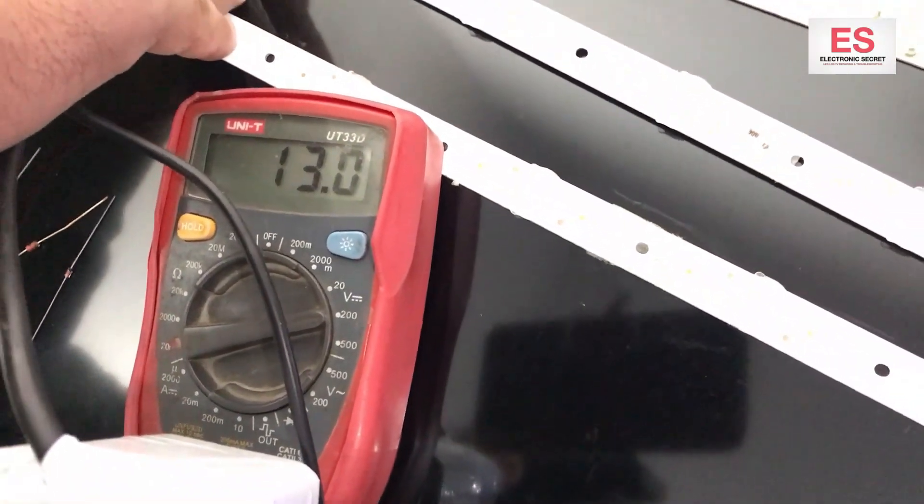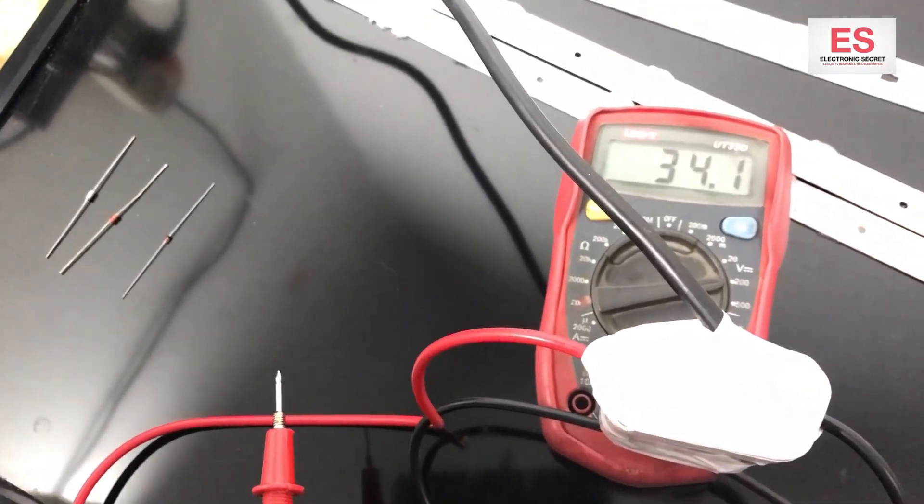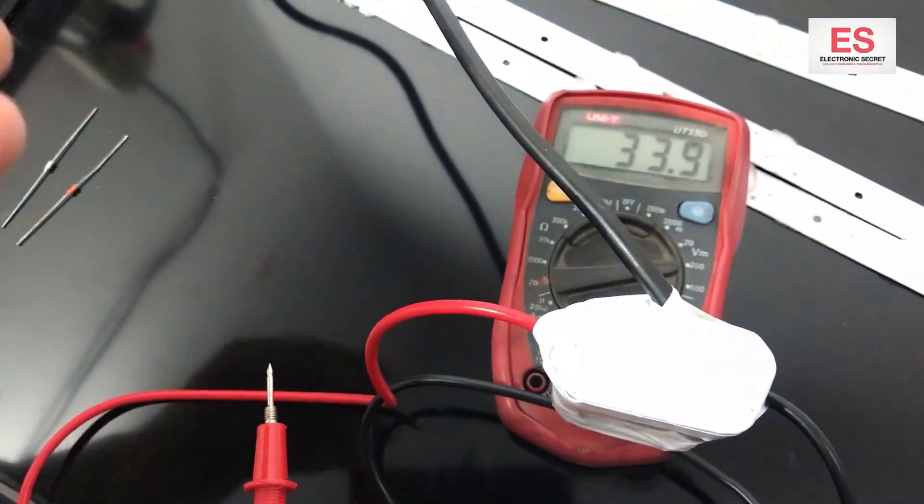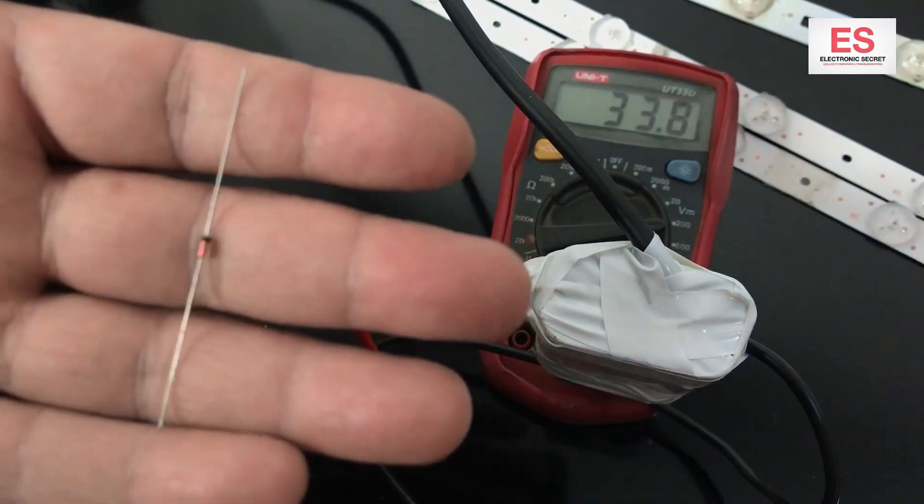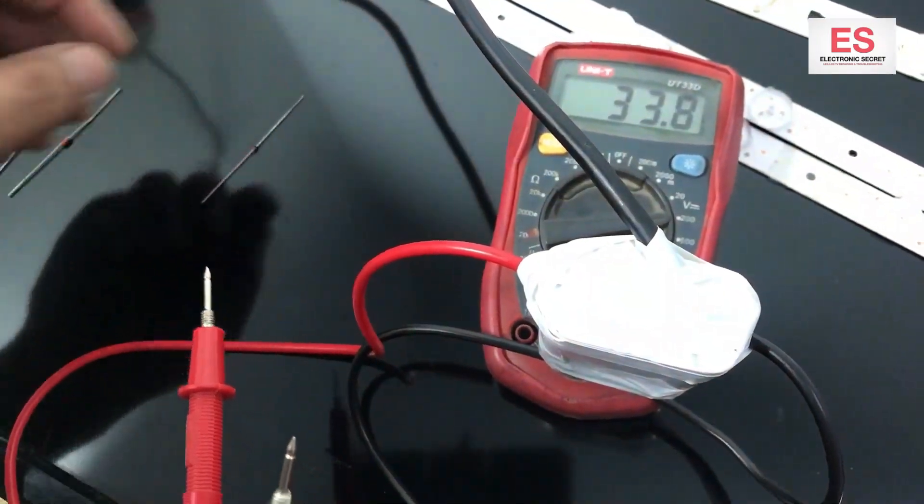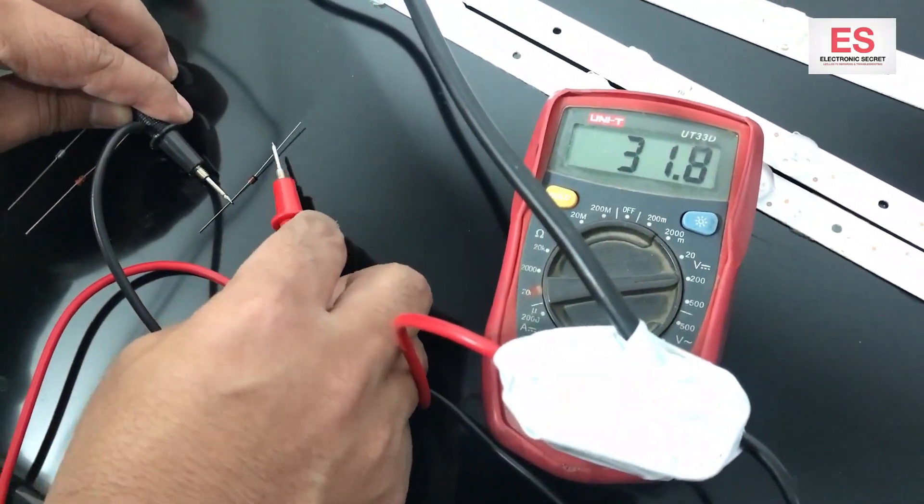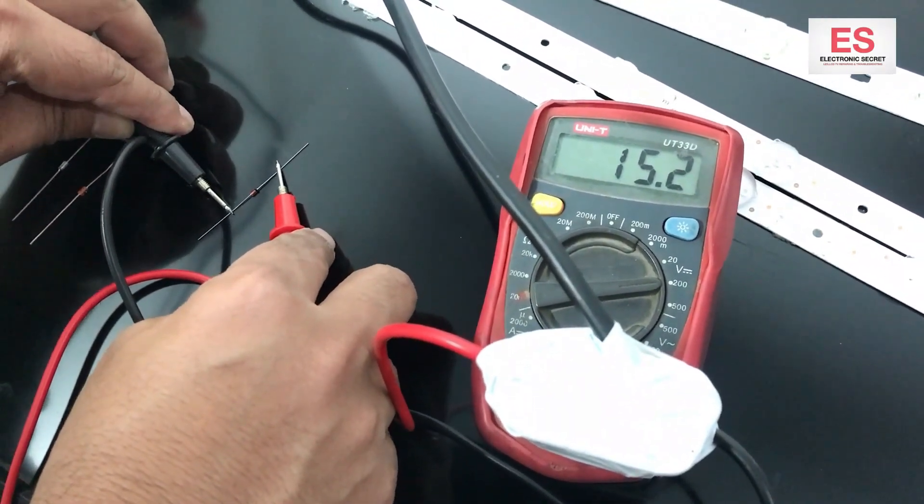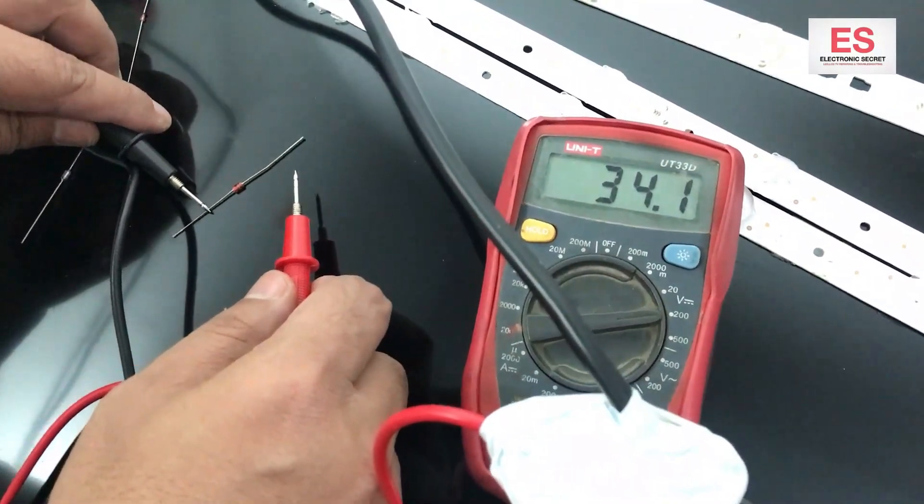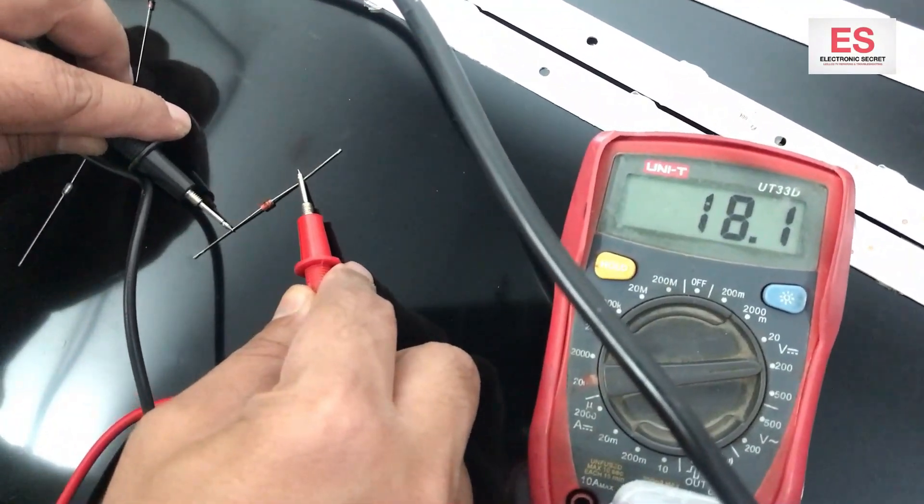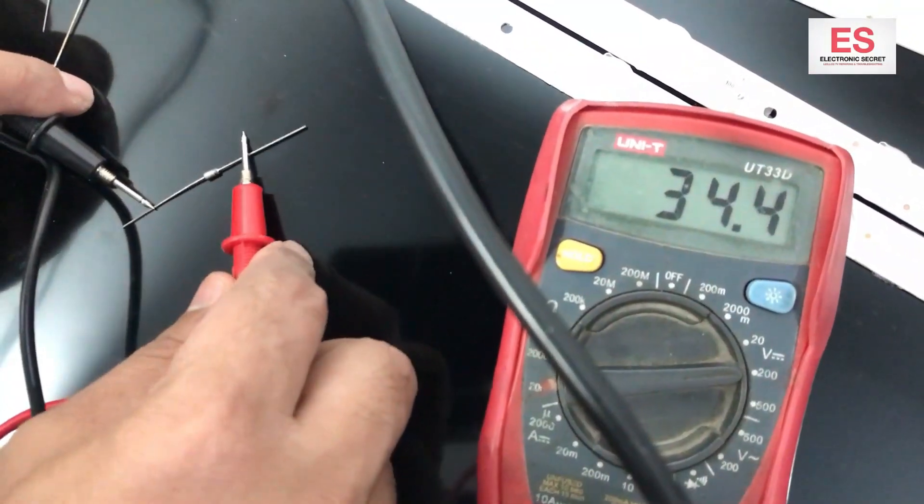Now I will check the zener voltage. This is very good because they have very small values written on them and we cannot read it. So this is a 15 volt zener, it is 18 volt zener, and this is 12 volts zener.